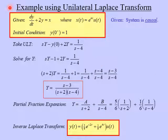So let's look at an example. So let's say we're given a system that is described by this differential equation: dy/dt plus 2y equals x, where x, the input to the system, is equal to e to the 4t times u of t. And we're also told that the system is causal. The other information that we're given is that the system is not initially at rest. It has an initial condition. The output of the system, y, at time zero is equal to one.